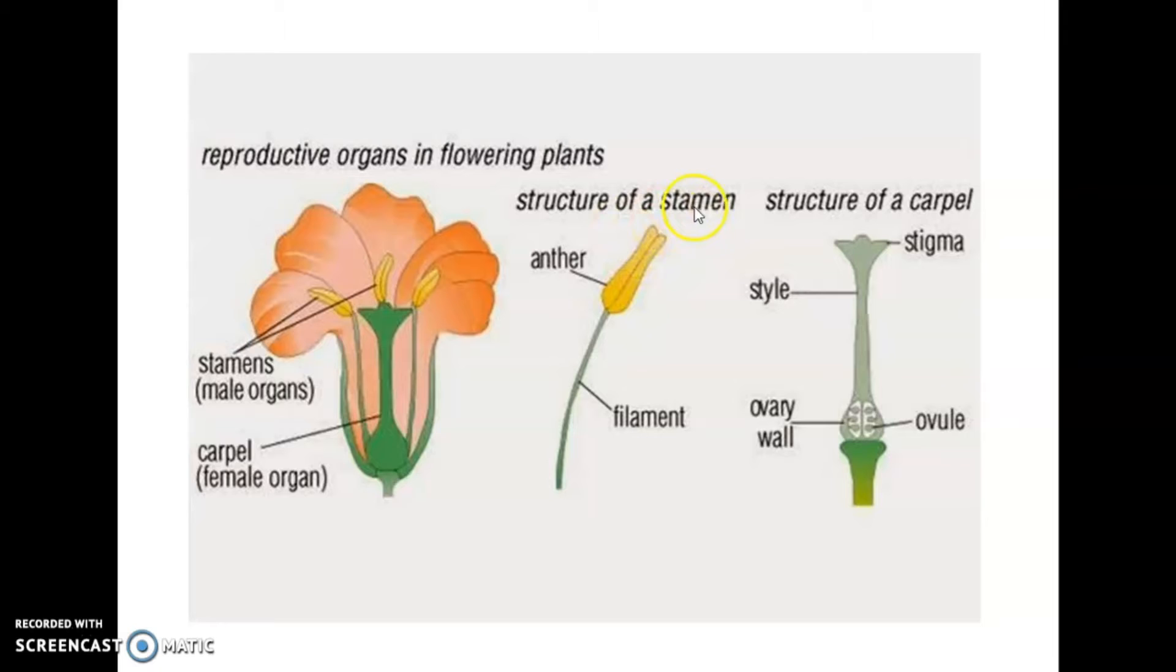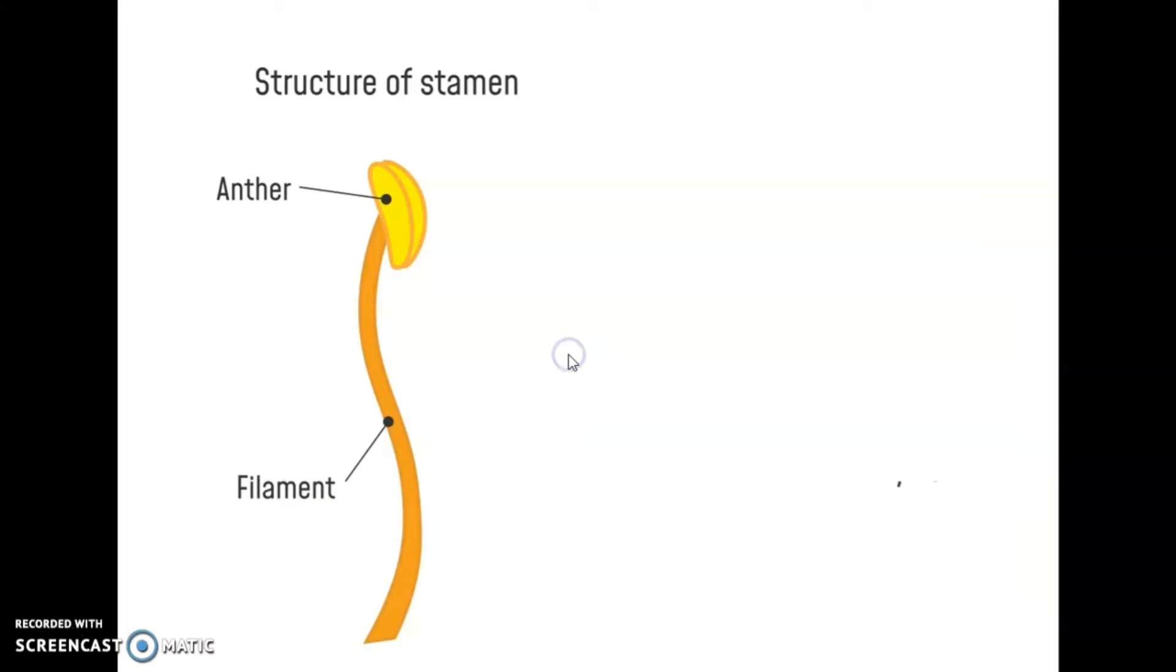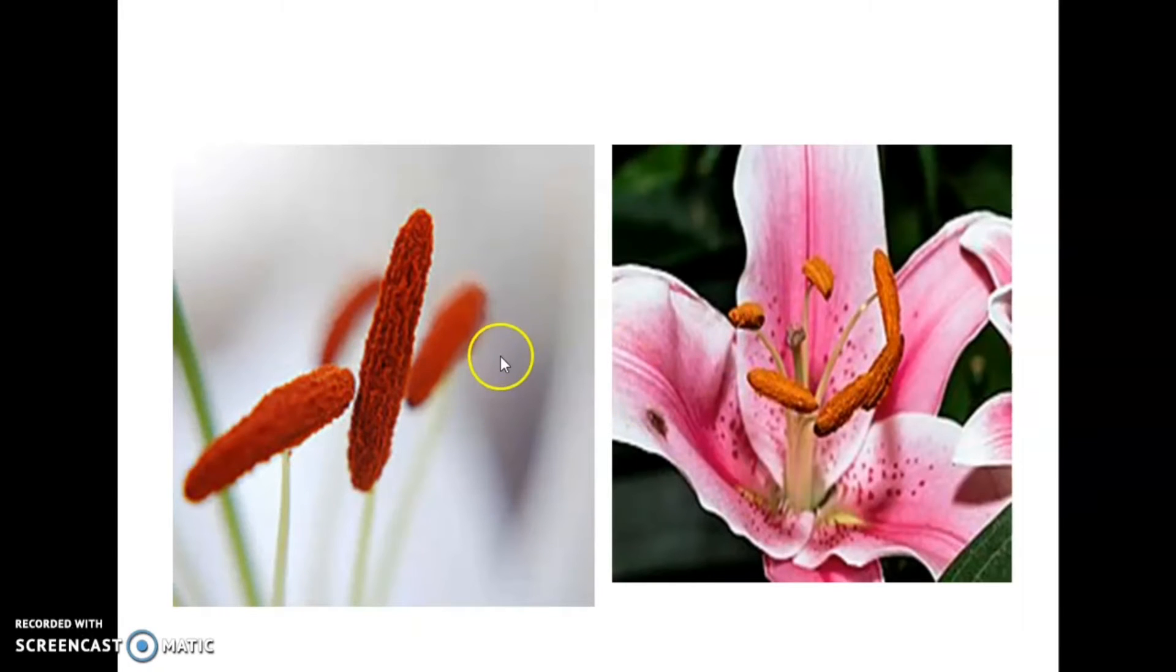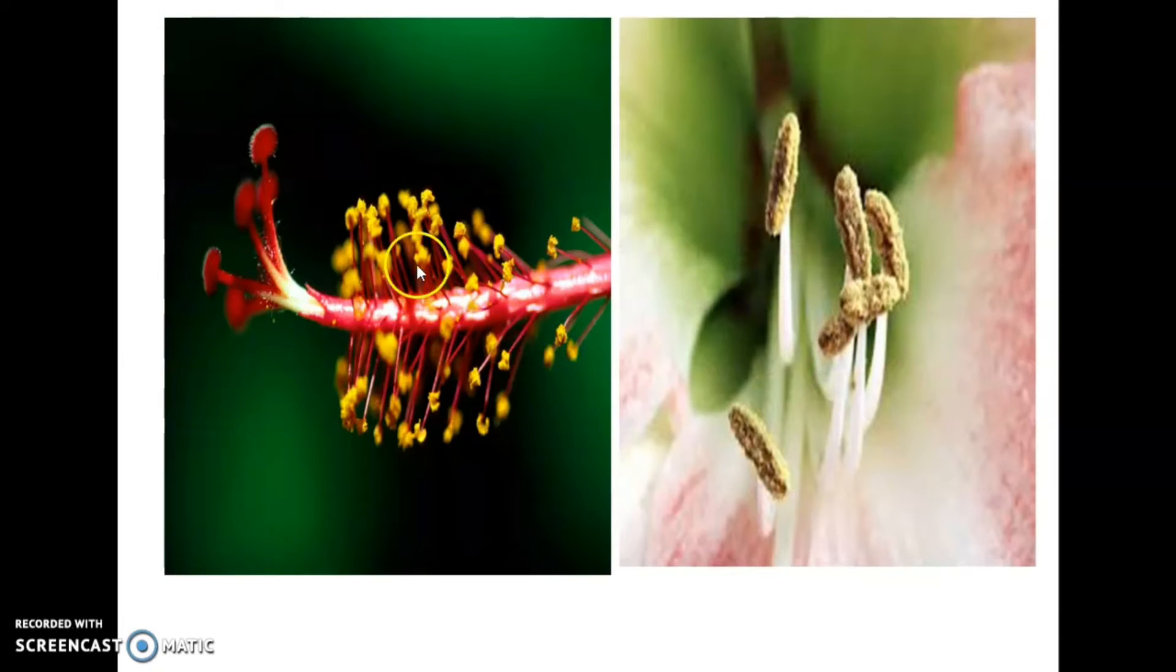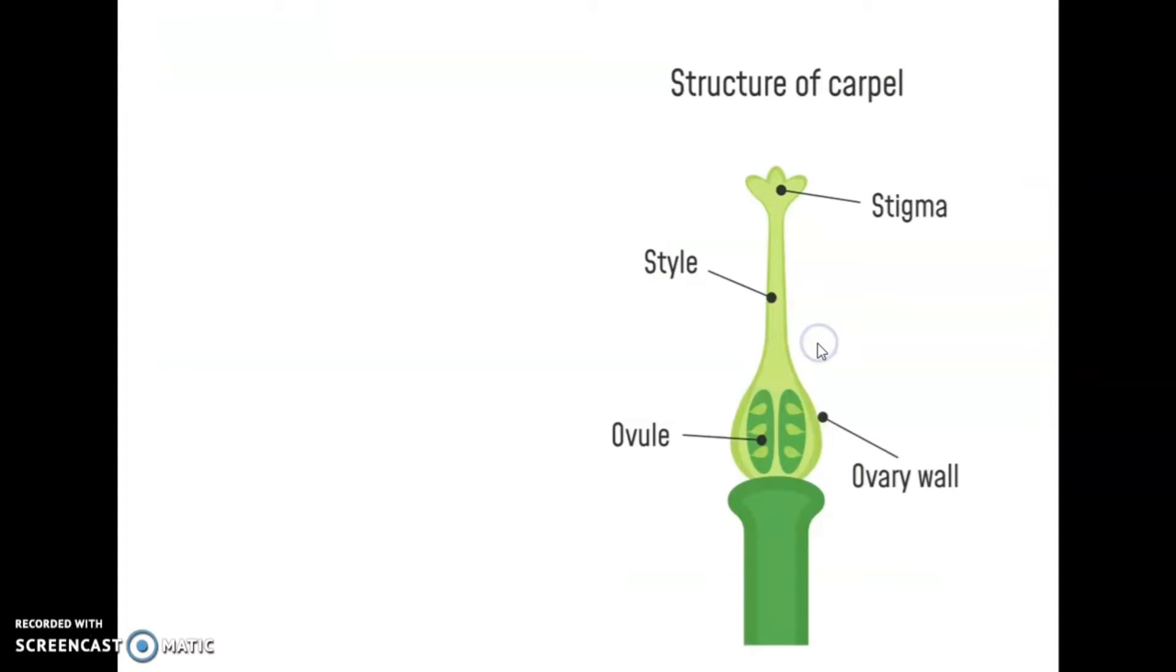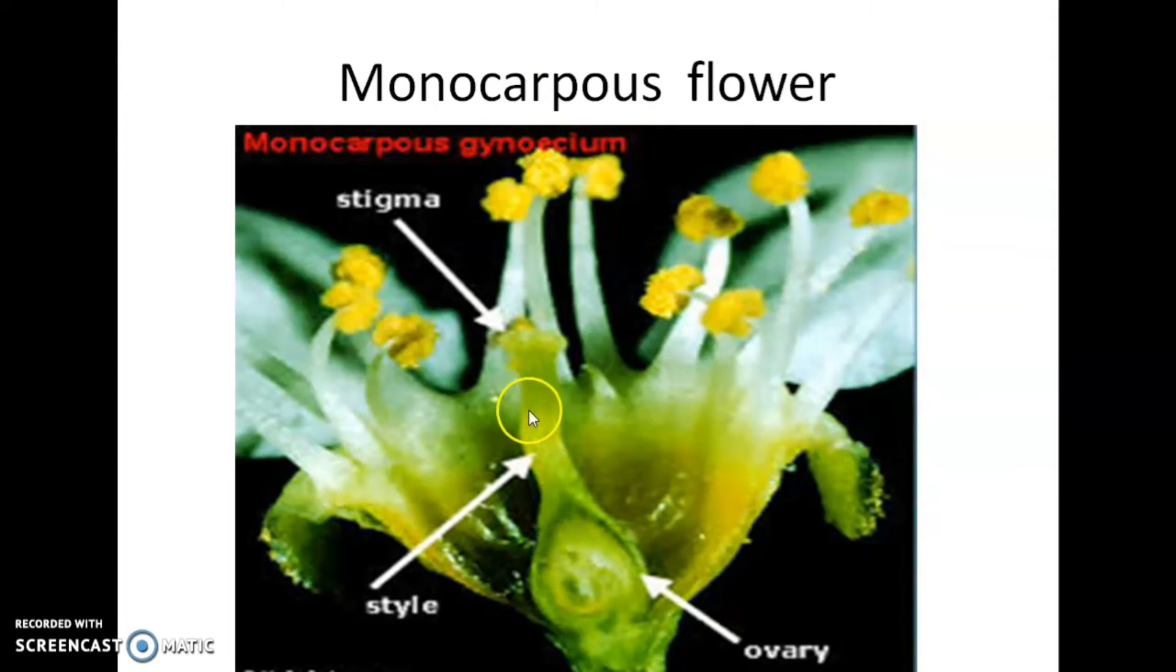See, this is structure of stamen. Anther and filament are there. Collectively we can call it the male reproductive structure. The female reproductive structure consists of stigma, long style, and ovary. Then structure of carpel, this is carpel.